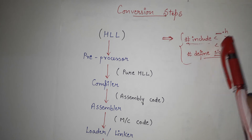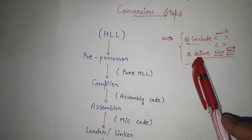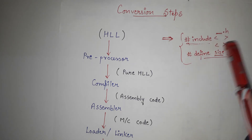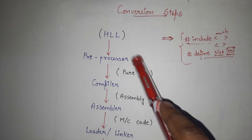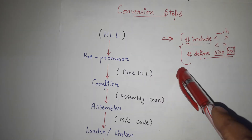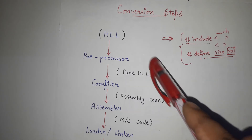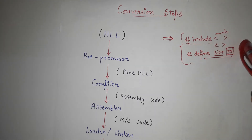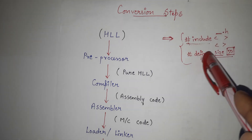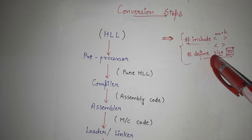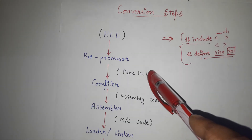Whenever we have written #include, the pre-processor understands it is file inclusion; whenever we have written #define, it understands it is macro expansion, and it performs the required actions. After including files and assigning values, the pre-processor does all these things automatically, and then we get something known as pure high-level language. In pure high-level language, #define, #include, and all such preprocessor directives are removed.